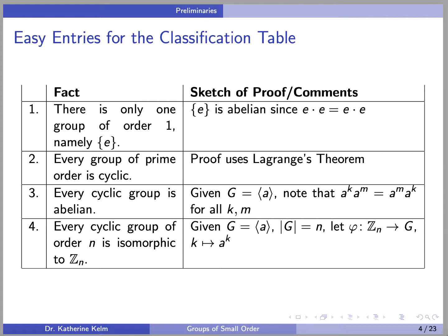Fact 2: every group of prime order is cyclic. The proof uses Lagrange's theorem, which says that the order of any subgroup of a group divides the order of the group. If your group is of order p, where p is prime, then the only possibilities for divisors of p are 1 and p. So if you take an element a and generate a subgroup, if a is the identity element you generate only the trivial subgroup, whereas if a is not the identity element you generate the entire group, because that subgroup must be of order p. Therefore your group is cyclic of order p.